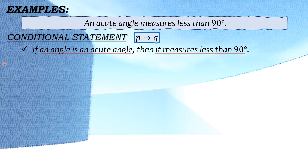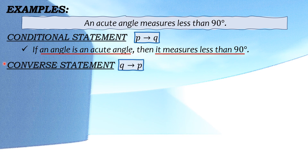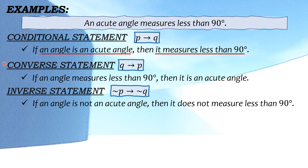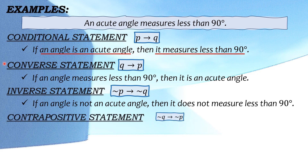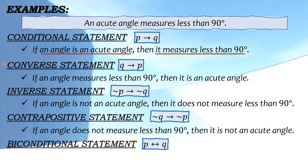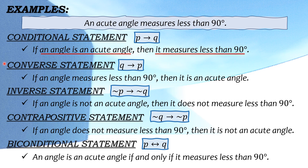So meron na tayong conditional statement, mas madali na para sa atin ang mahanap ang inverse statement hanggang sa biconditional statement. So sundan natin ng converse statement — kabaliktaran lang ng conclusion at ng hypothesis. So magiging: if an angle measures less than 90 degrees, then it is an acute angle. Next is inverse statement — negative. So magiging: if an angle is not an acute angle, then it does not measure less than 90 degrees. Next is contrapositive statement — kabaliktaran naman ng inverse. So magiging: if an angle does not measure less than 90 degrees, then it is not an acute angle. And the last is biconditional statement — dadagdagan lang natin ng words na 'if and only if'. So: an angle is an acute angle if and only if it measures less than 90 degrees.